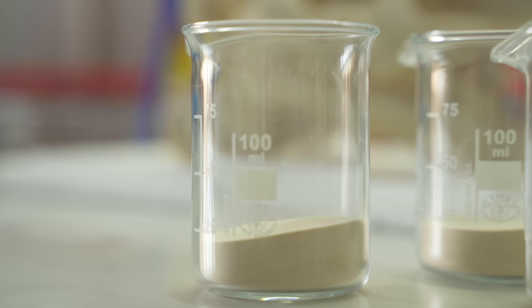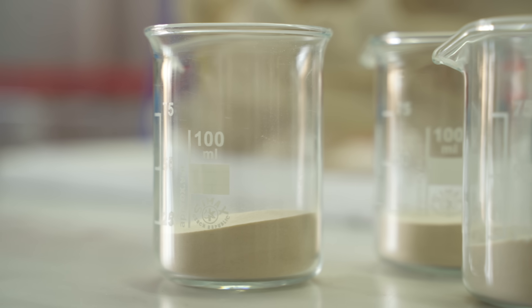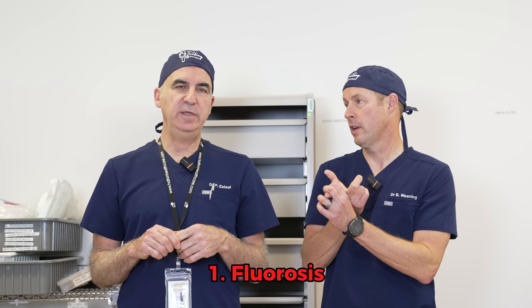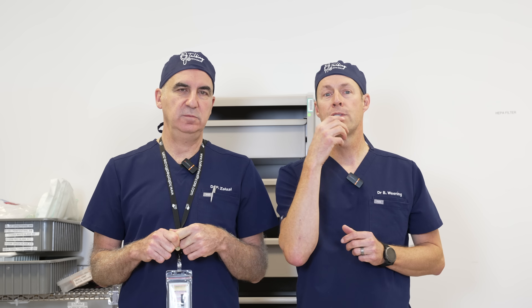It's very hard to harm yourself with fluoride — you would have to ingest a lot of it. The main complication from too much fluoride is fluorosis, where fluoride is deposited in your teeth and bones. In your teeth it can cause brown staining, and in your bones it can make them brittle because fluoride competes for mineral binding sites.